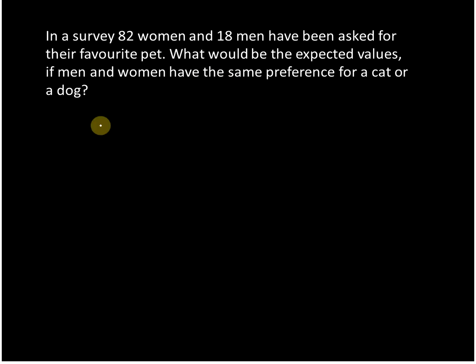The easiest way to start is to simply say how many people have we surveyed. That's very simple: we surveyed 82 females plus 18 men, so we have a total population of 100 people.